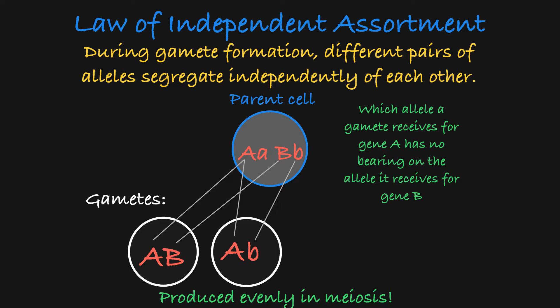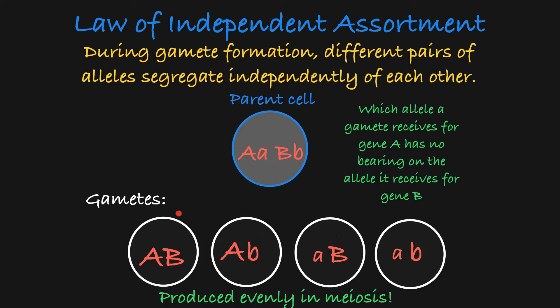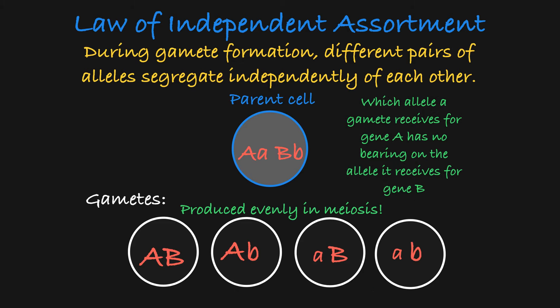These two gametes would be produced evenly in meiosis. Likewise, if the gamete receives the recessive allele for gene A, it is equally likely to receive either of the alleles for gene B. So these are all of the possible gamete genotypes that could be created from this parent, and the Law of Independent Assortment tells us that each combination has an equal probability of occurring, because the allele you give a gamete for one gene has no bearing on the alleles that gamete receives from other genes.